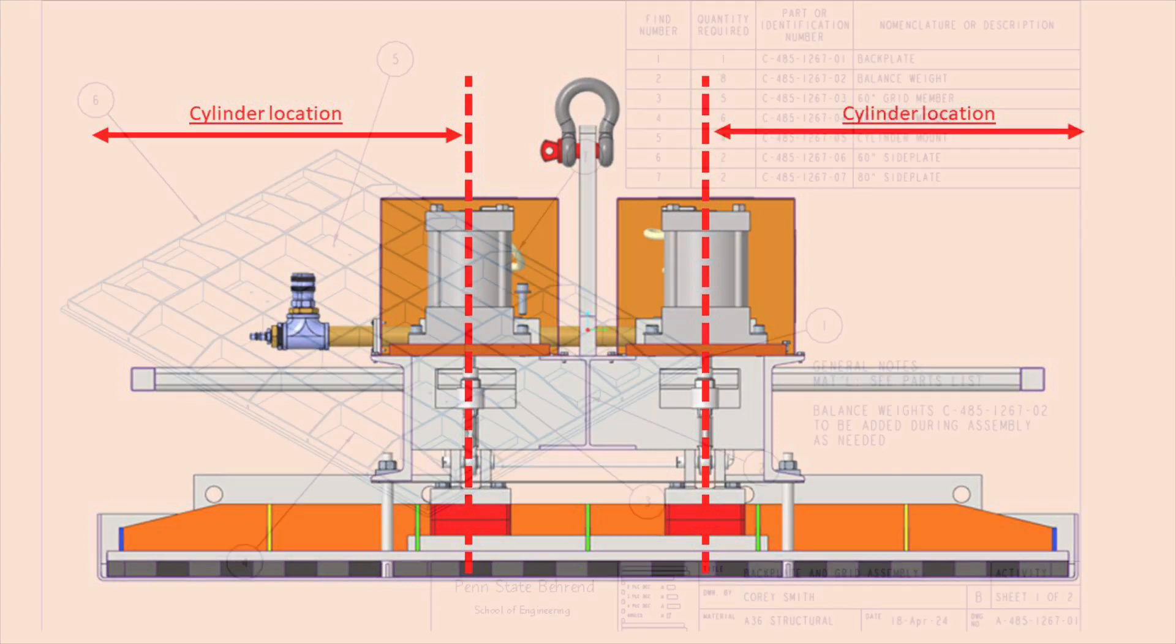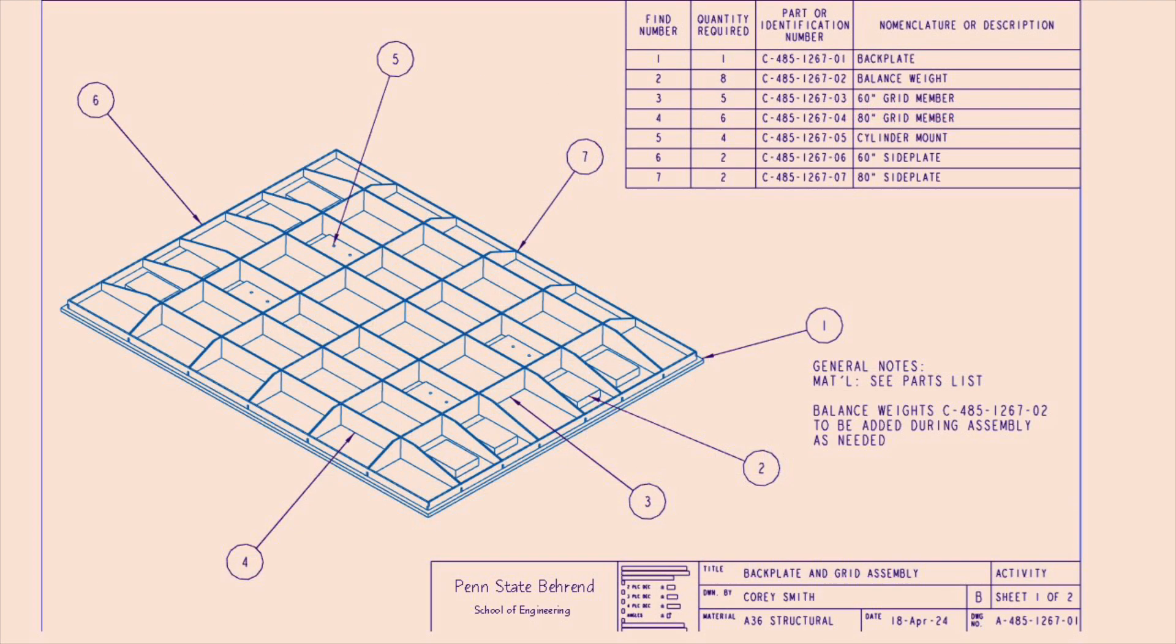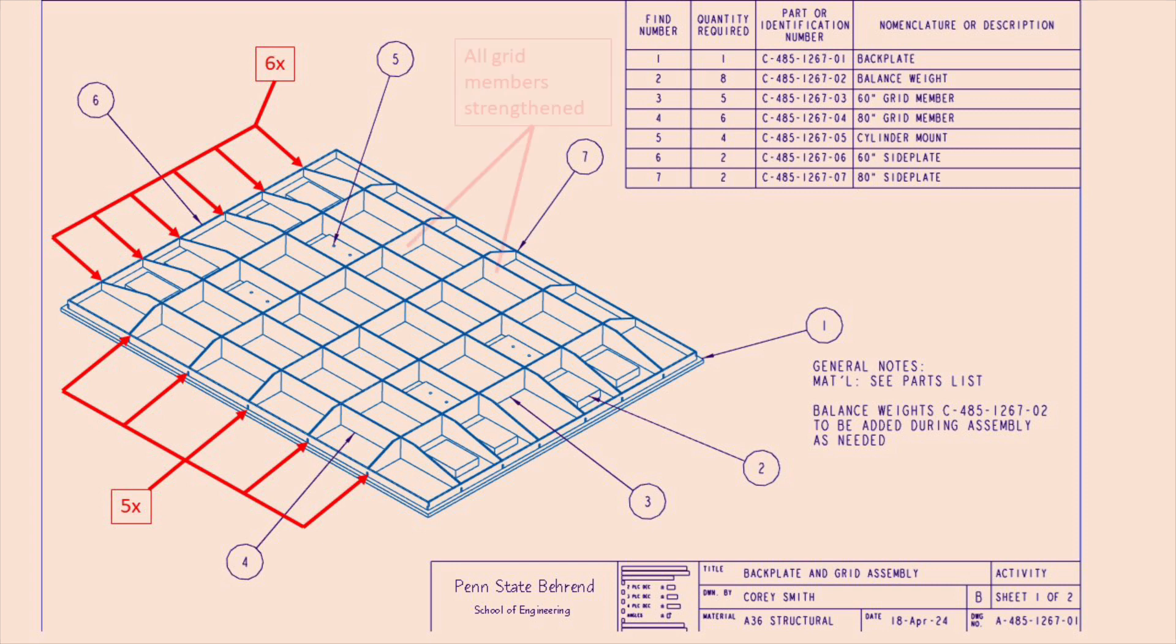To achieve this, the components for the back bar and grid assembly were redesigned and analyzed. The team reorganized the grid assembly to a new 5 by 6 design and resized the members making them more equipped to handle this heavier load which increased from 1875 pounds to 2450 pounds. The cylinder placement was also optimized.